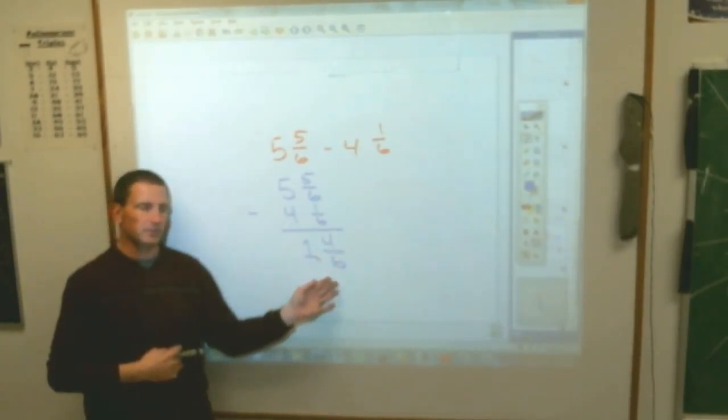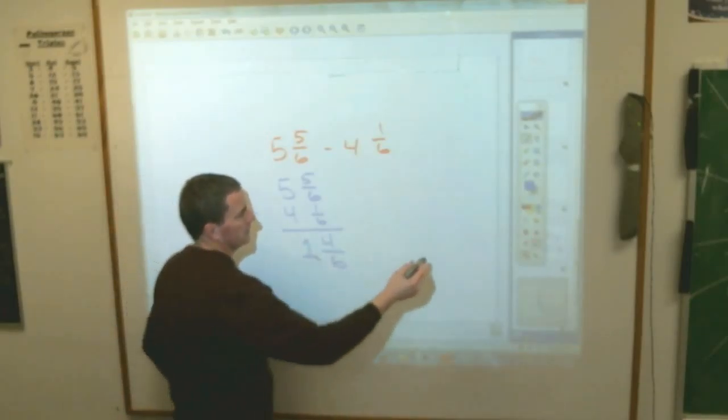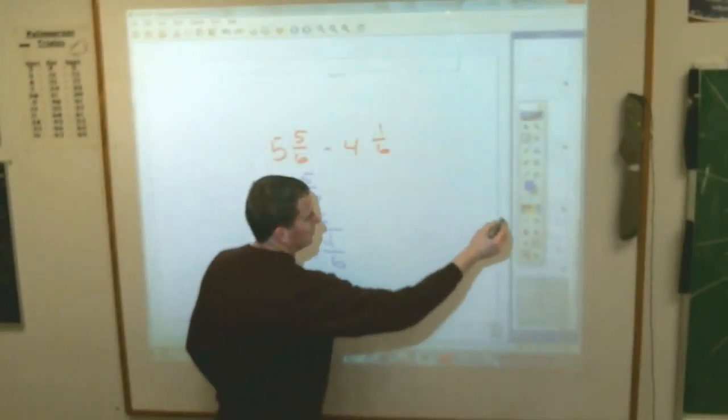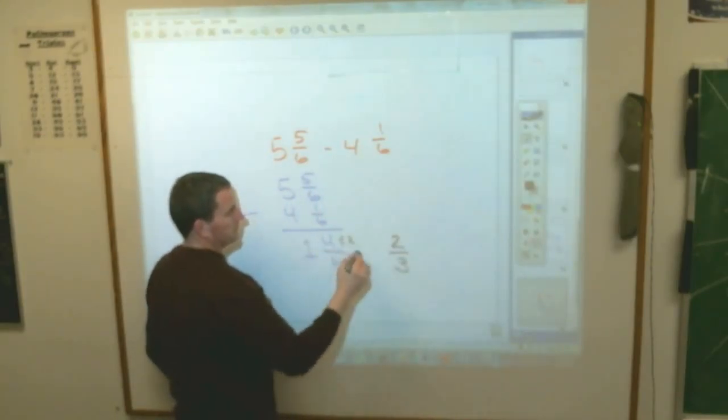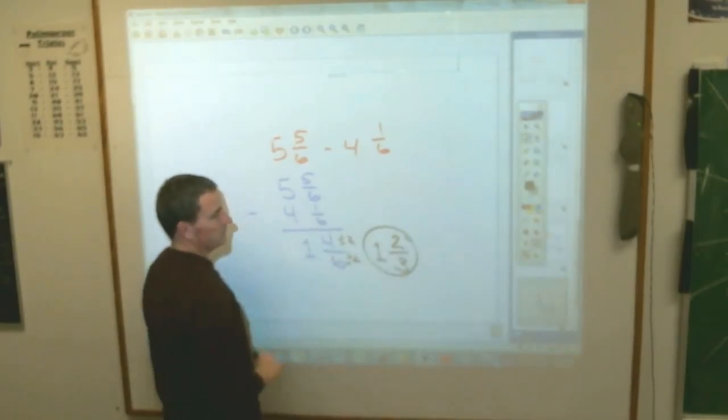And what number goes into 4 sixths? 2. And if I divide them both by 2, cut them both in half, I end up with 2 thirds. And you still have the whole number 1 in front. 1 and 2 thirds.